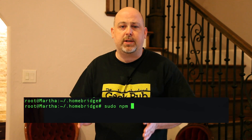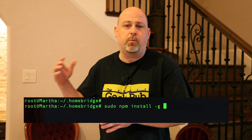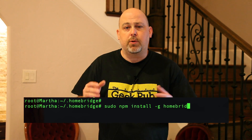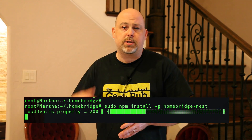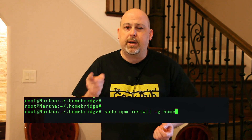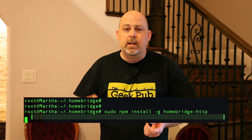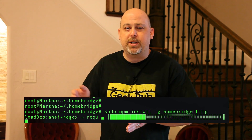Now we're ready to install some plugins and the configuration file. It depends on what product you have, but it's basically the same for everything. Type npm install -g and then HomeBridge- followed by the name of the plugin you want — for example, HomeBridge-Nest, HomeBridge-Liftmaster, or HomeBridge-Sonos. Interestingly, HomeSeer doesn't have a plugin for HomeBridge, but it does support JSON commands over HTTP. So all we have to do is install HomeBridge-HTTP and write a little JSON to translate.